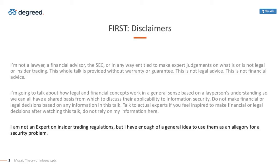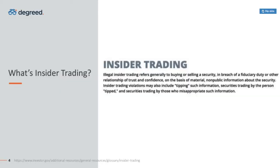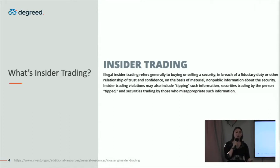Do not rely on my information and do not make decisions because of anything I say today. I am not an expert on insider trading regulations, but I have enough of a general idea to use them as an allegory for a problem that security faces. So first, we're going to talk about what mosaic theory is, give a few examples of what does or does not fall under it, talk about how you can use this, and then revisit and wrap up. First, the SEC's definition of insider trading: illegal insider trading refers generally to buying or selling a security in breach of a fiduciary duty or other relationship of trust and confidence on the basis of material non-public information about that security.